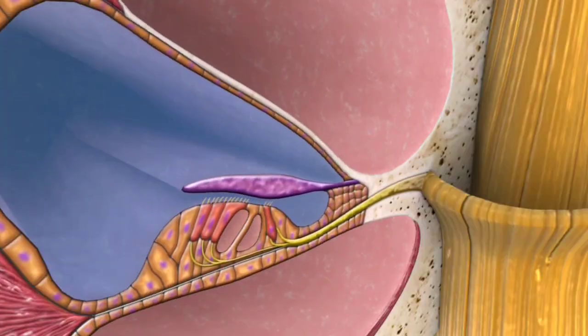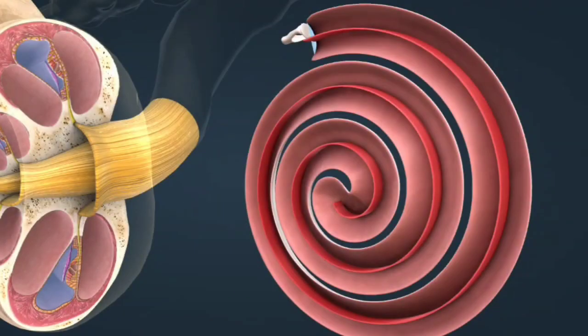Third, inner ear: transducing sound. Cochlea, a spiral-shaped fluid-filled structure where sound vibrations are converted into neural signals.